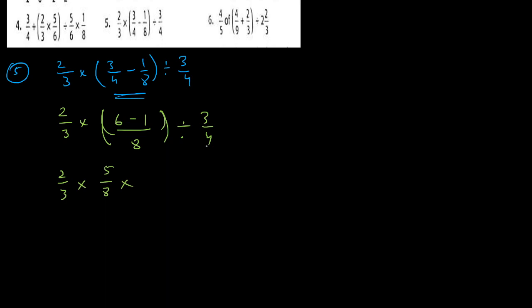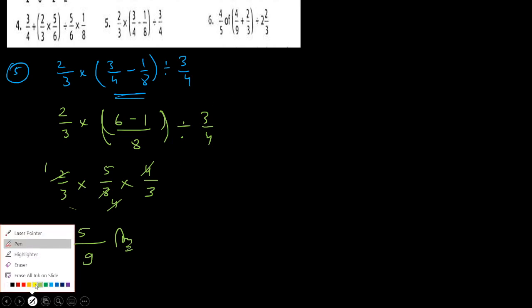Then change this division sign into multiply and reciprocate the fraction, so 3 upon 4 becomes 4 upon 3. Two ones are two, two fours are eight, four ones are four — fours cancel. Finally 5 in the denominator and three threes are nine, giving 5 upon 9 as the answer.